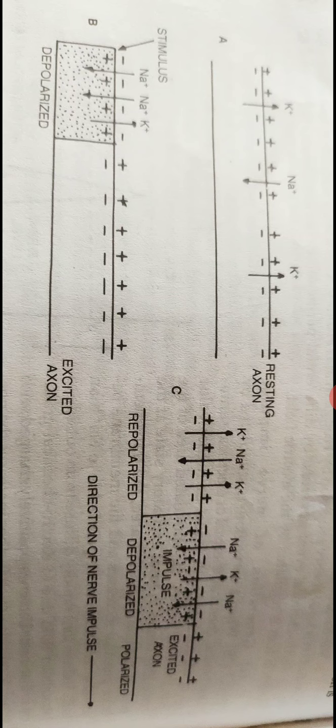After an excitation, nerve fiber undergoes a recovery period in which it regains its original ionic distribution and polarity and prepares itself for the next stimulation. This period of recovery of the nerve fiber is called refractory period.